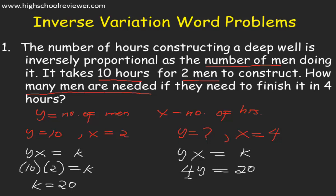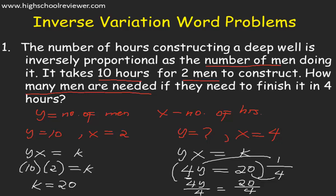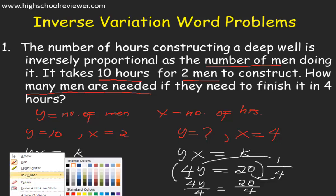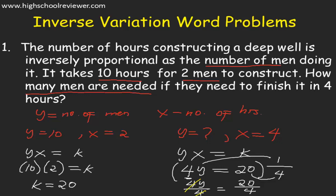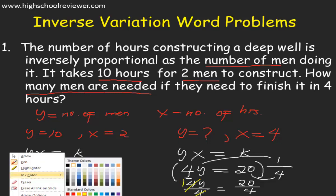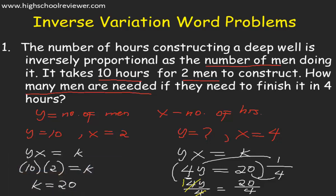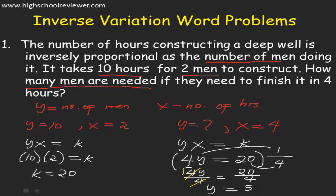To find Y, we need to cancel out 4 by dividing both sides of the equation by 4. This gives us 4Y over 4 equals 20 over 4. 4 divided by 4 equals 1, so we get Y. 20 divided by 4 is 5. So our Y is 5 men. Therefore, 5 men are needed to finish constructing the deep well within 4 hours.